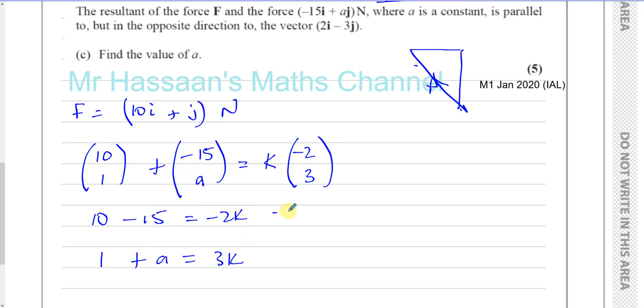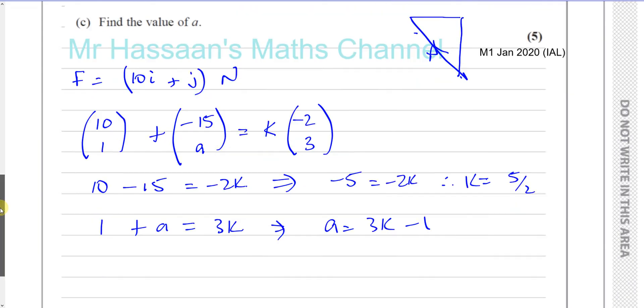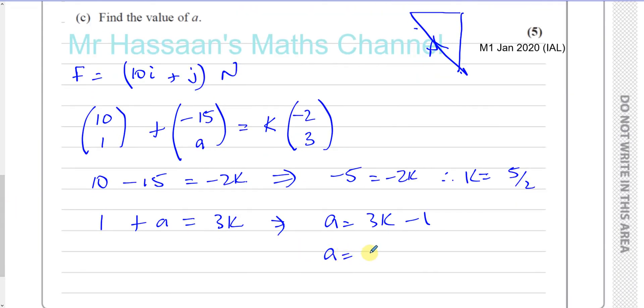Okay, so if I take this and I find what K is, you've got 10 minus 15 which is minus 5 equals minus 2K. That means K is equal to 5 over 2. That's the value of K. And we can therefore find what A is. A is going to be 3 times K minus 1. So, it's 3 times 5 over 2 minus 1 which gives you 15 over 2 minus 2 over 2 which is 11 over 2.